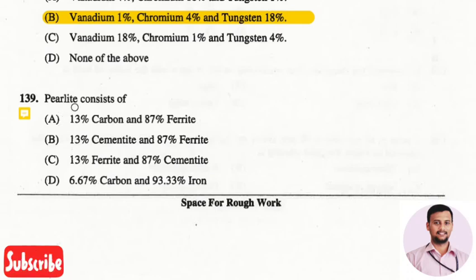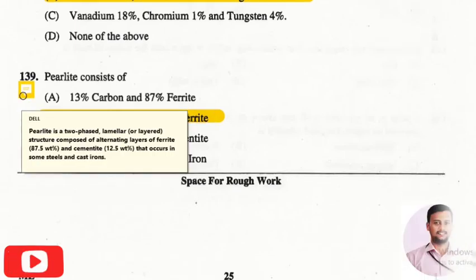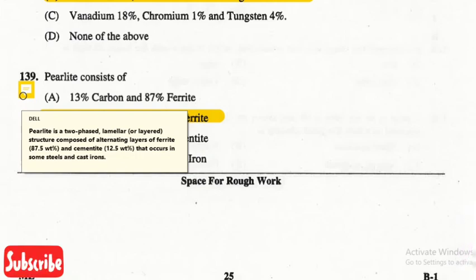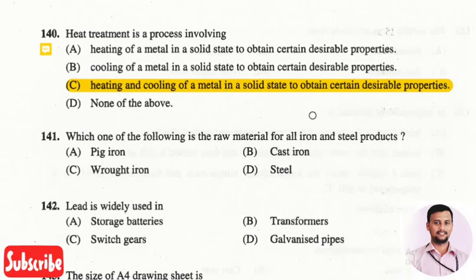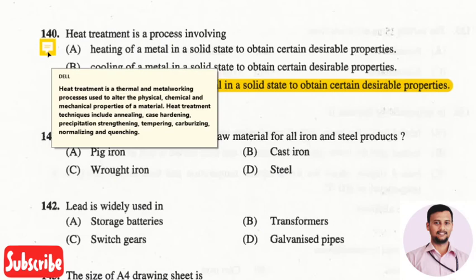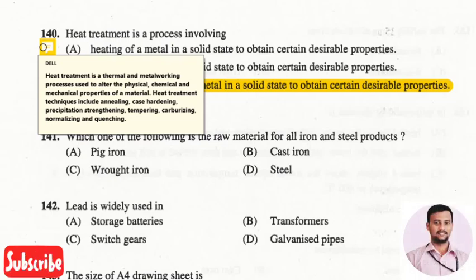The next question is: pearlite consists of? The right answer is option two — 13% cementite and 87% ferrite. Pearlite is a two-phased lamellar structure composed of alternating layers of ferrite and cementite that occurs in some steels and cast irons. The next question is: heat treatment is a process involving? The right answer is option three — heating and cooling of a material in a solid state to obtain certain desirable properties. Heat treatment is a thermal and metalworking process used to alter physical, chemical, and mechanical properties of a material, and includes techniques such as annealing, case hardening, tempering, carburizing, normalizing, and quenching.